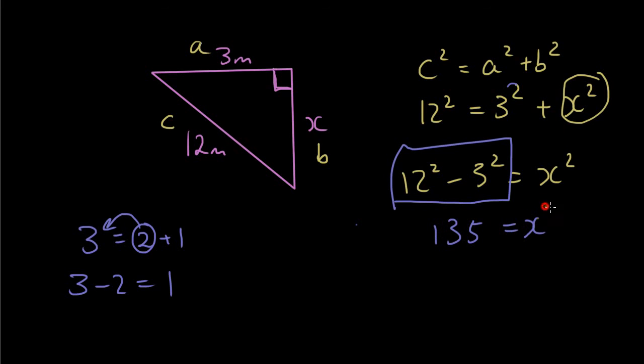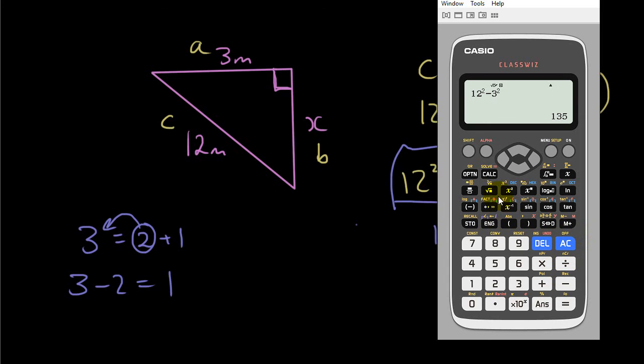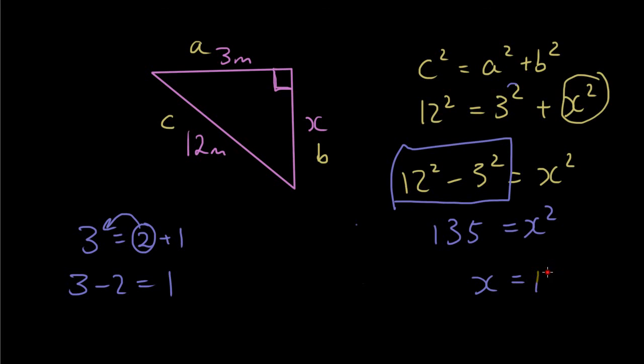Now to get x, you're gonna square root one three five. So square root one three five. And you have eleven point six two. Two decimal places.